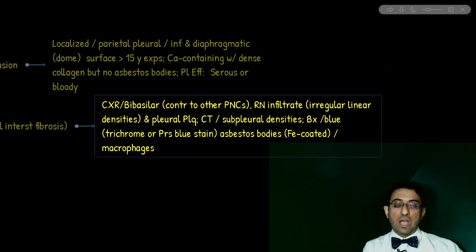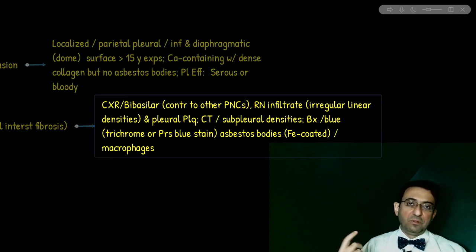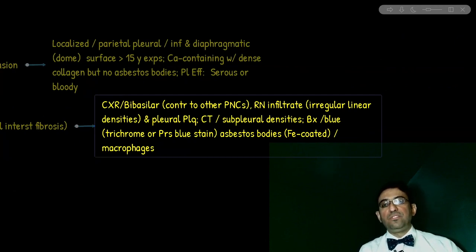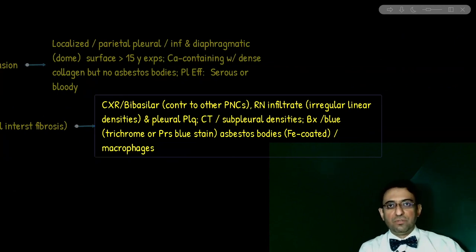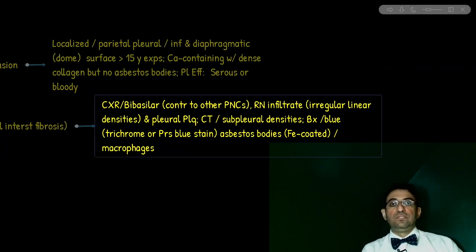Regarding asbestos bodies, remember there are two types: the serpentine form and the amphibole type. Only the amphibole type can cause mesothelioma because it is not soluble and can reach the very distal airway fields, while the serpentine type is more flexible, curvy, and soluble and thus not as dangerous. Asbestosis manifests as symptoms of interstitial lung disease — progressive dyspnea — and lung auscultation would show bibasilar crackles in the lower lung fields. The crackles are usually fine crackles, and the patient could also have clubbing.